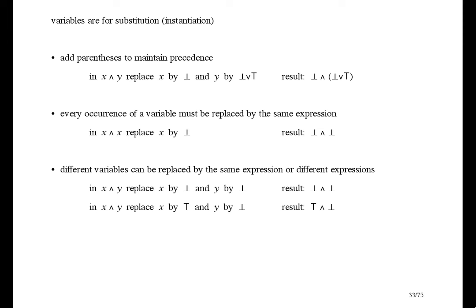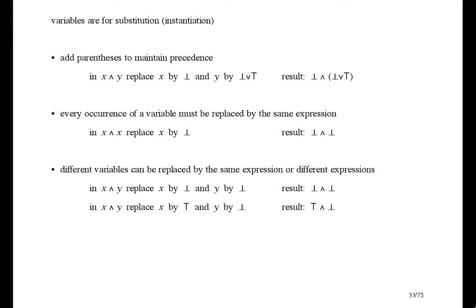That's all there is to binary expressions, so now we have to apply binary theory to some application area. An application always supplies its own new binary expressions. For example, it might supply expressions like: the grass is green, the sky is green, there is life elsewhere in the universe, and intelligent messages are coming from space. When we get to number theory, it will give us these new binary expressions, and infinitely many others.